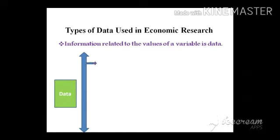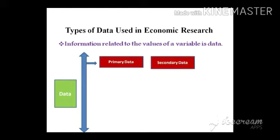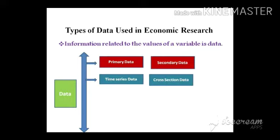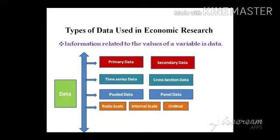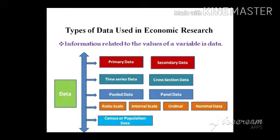The different types of data used in economics are: first, primary data and secondary data; then time series data, cross-section data, pooled data, and panel data. From another angle, on the basis of scale, we have ratio scale data, interval scale data, ordinal data, and nominal data. There is also population or census data and sample data.